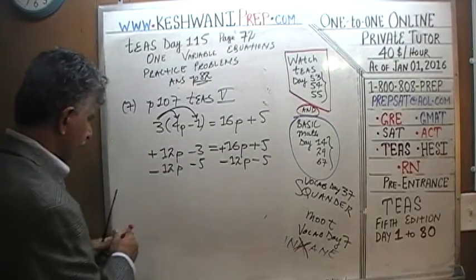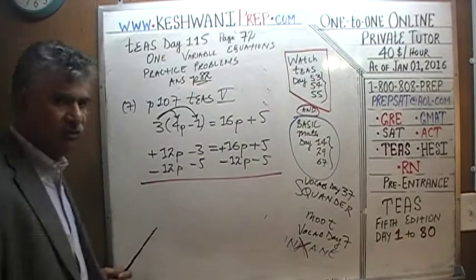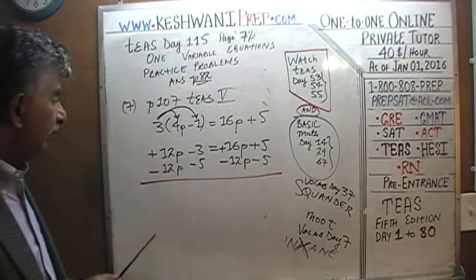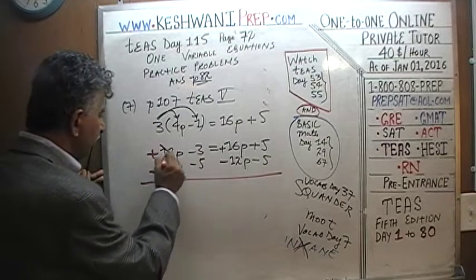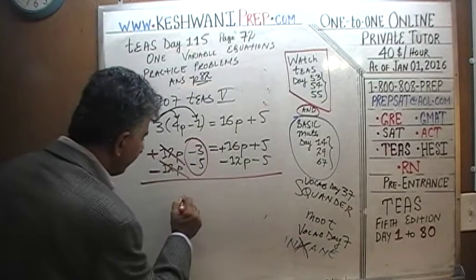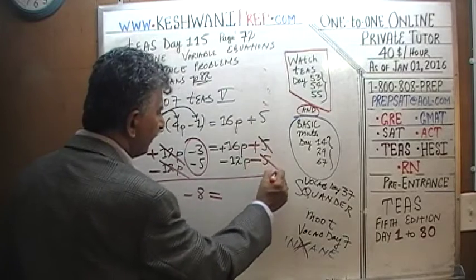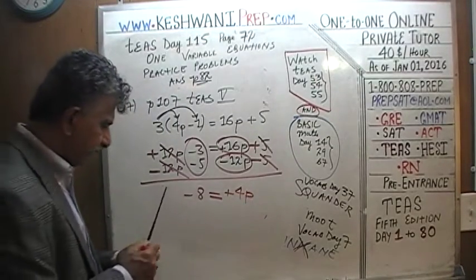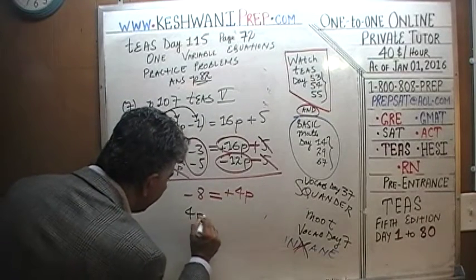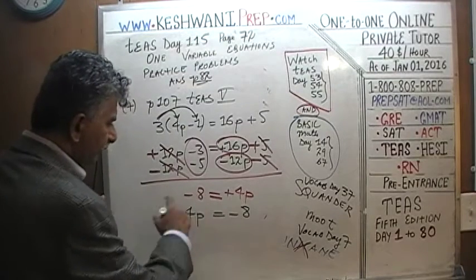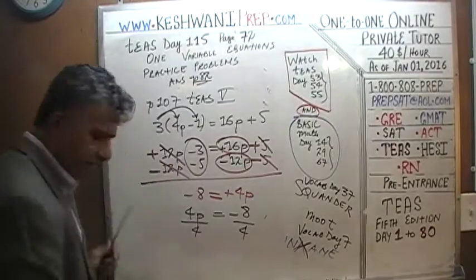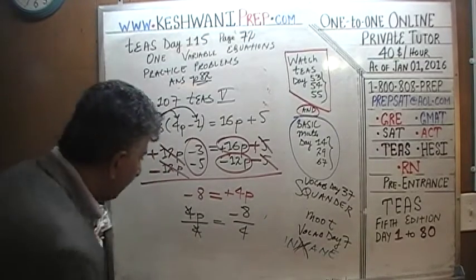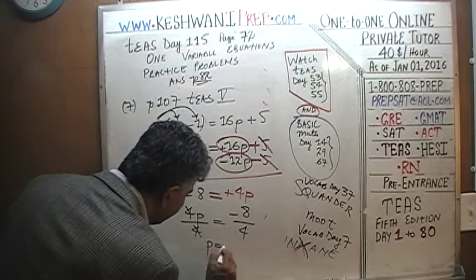Most people like to do these two things in two separate steps; I prefer to do them in one step, but either is fine. The positive 12P and negative 12P cancel out. Negative 3 and negative 5 gives us negative 8. Positive 5 and negative 5 cancel out. Positive 16P and negative 12P gives us positive 4P. So we have 4P equals negative 8. Let's divide both sides by 4 — the 4 cancels out — and P equals negative 8 over 4, which is negative 2.